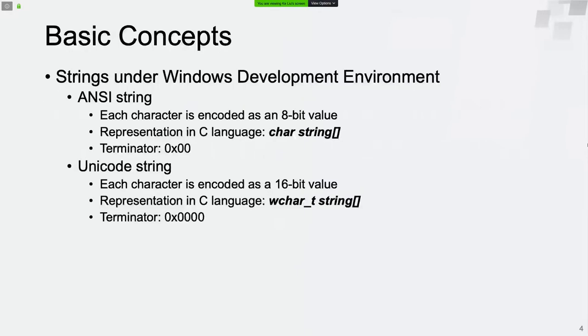First, let's talk about some basic concepts. Strings can be divided into two categories on Windows: ANSI strings and Unicode strings. For ANSI strings, each character is encoded as an 8-bit value. We can define a char type array in C language to store the string data. The string terminator is a 1-byte null character.